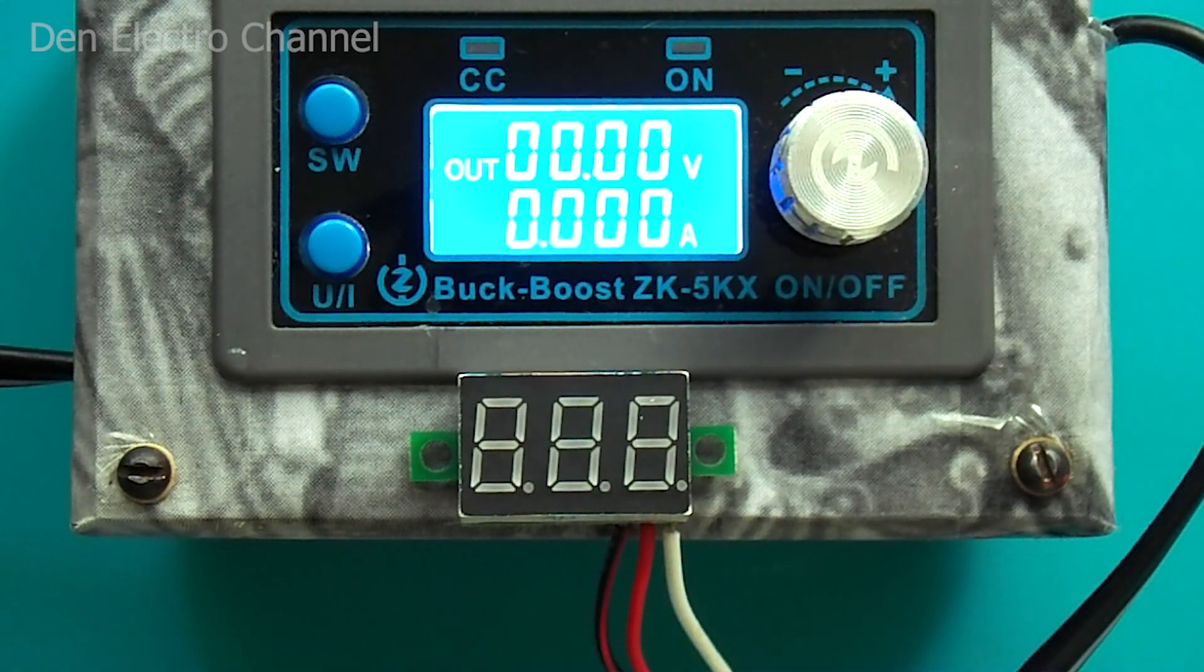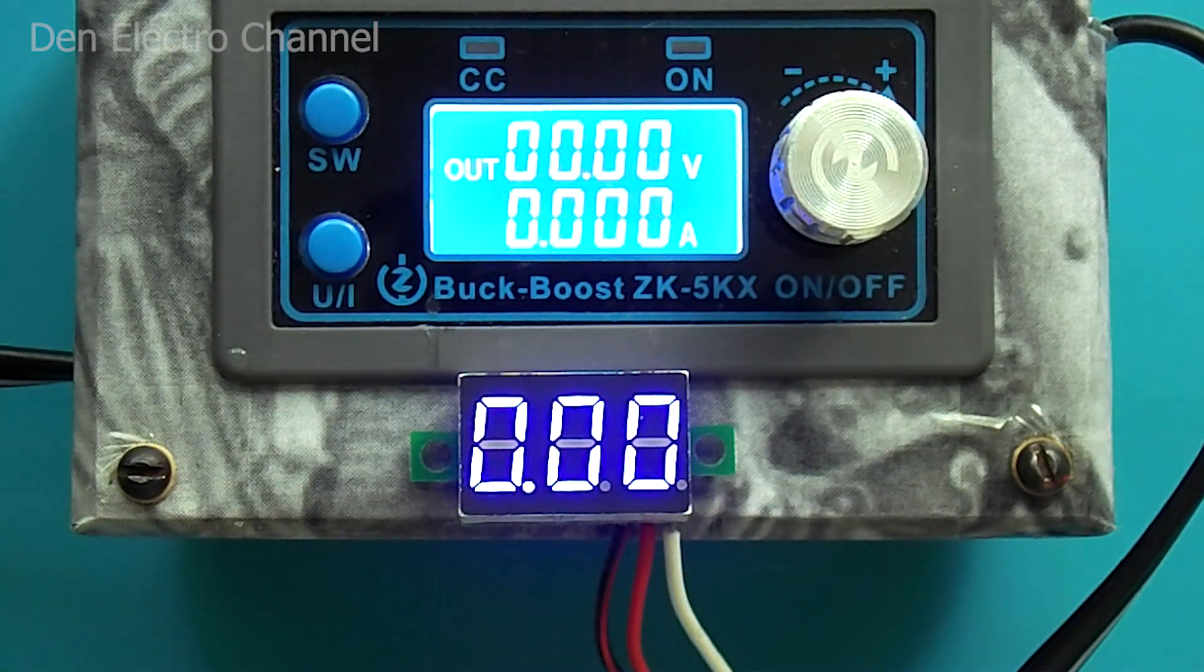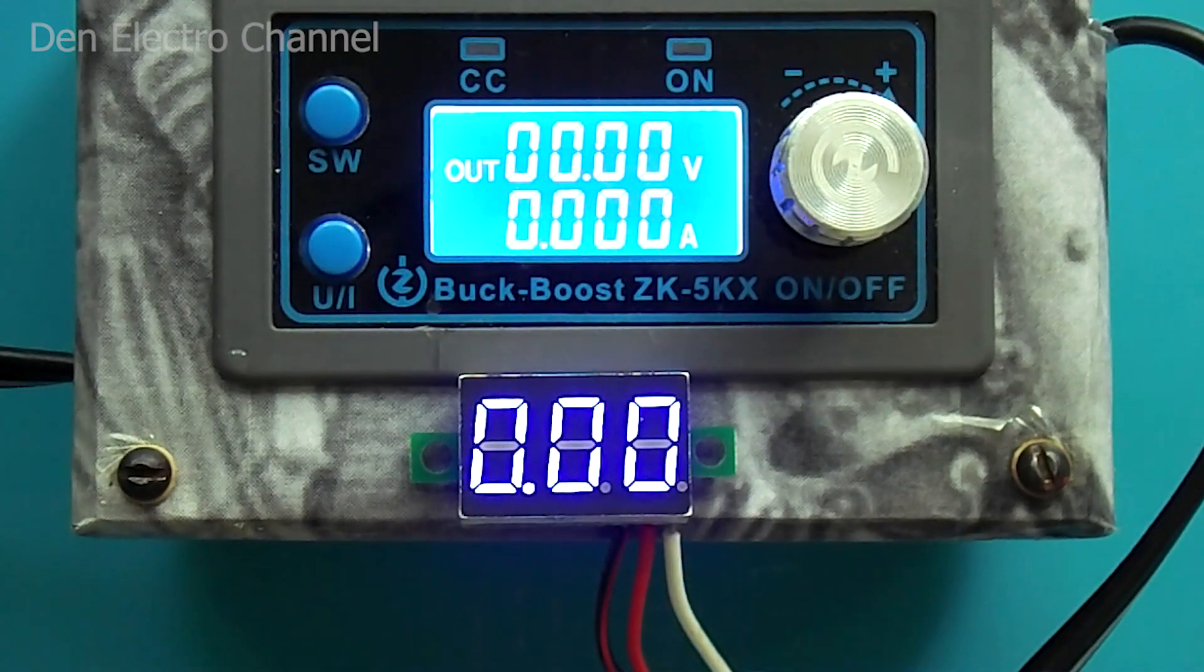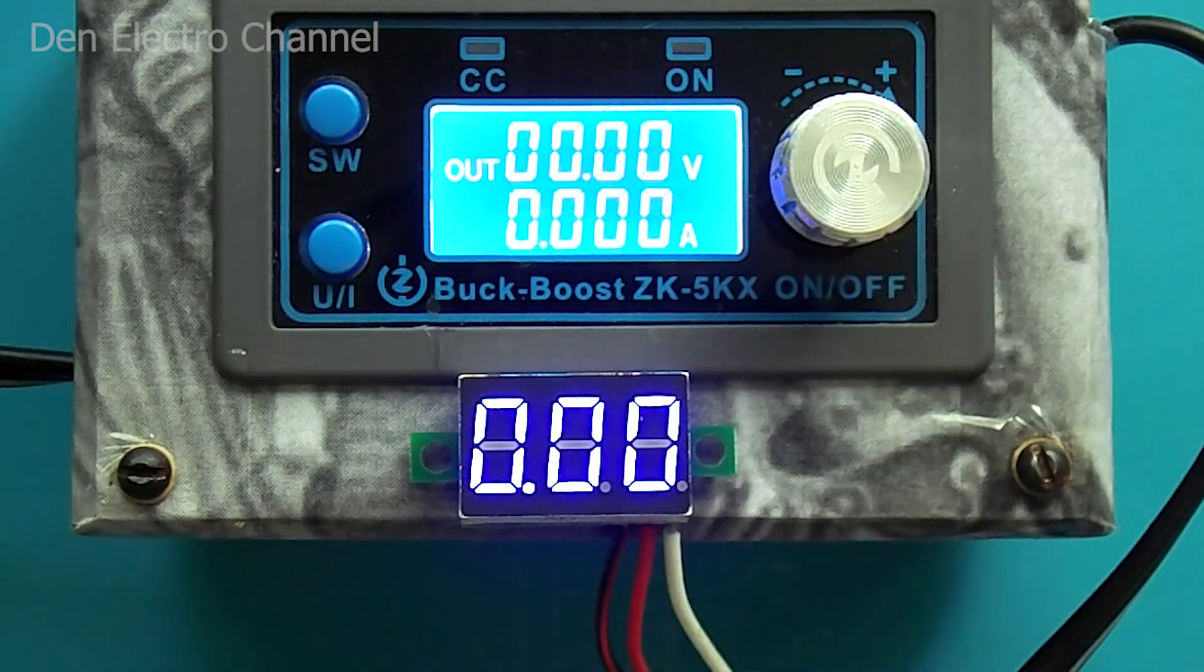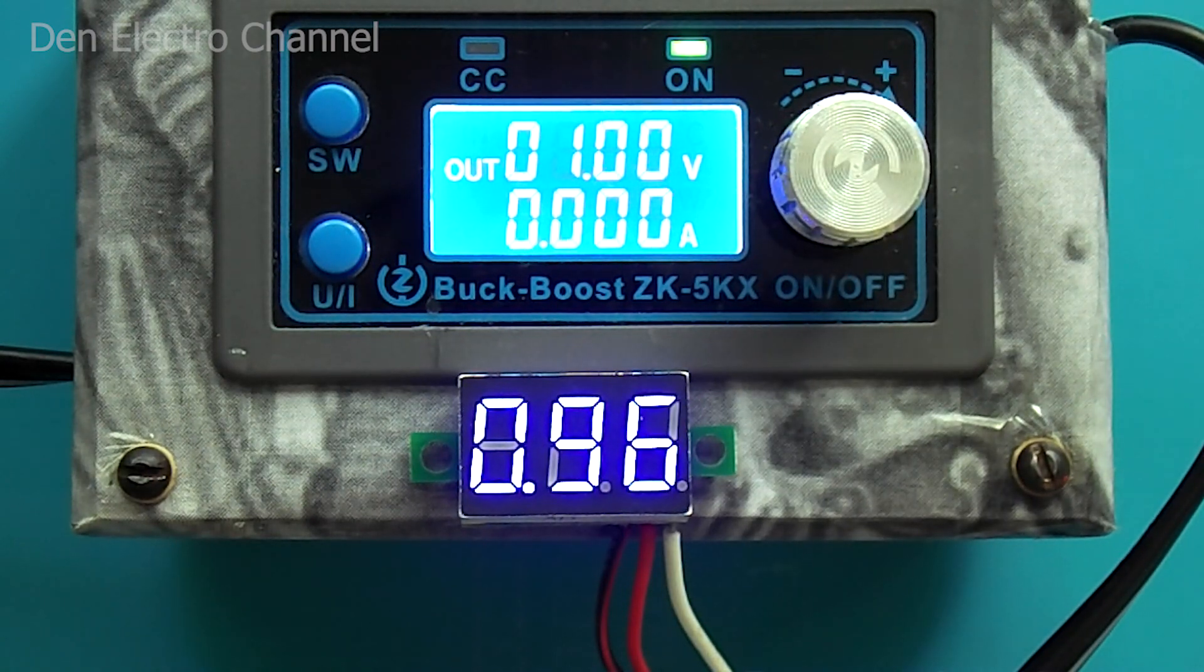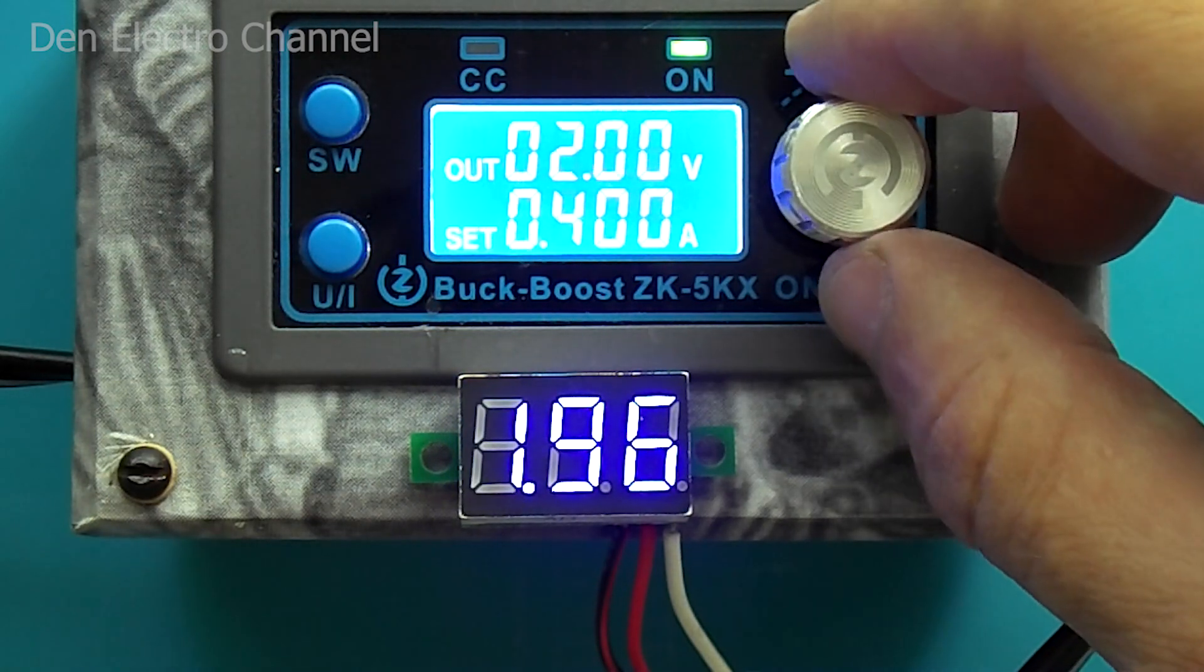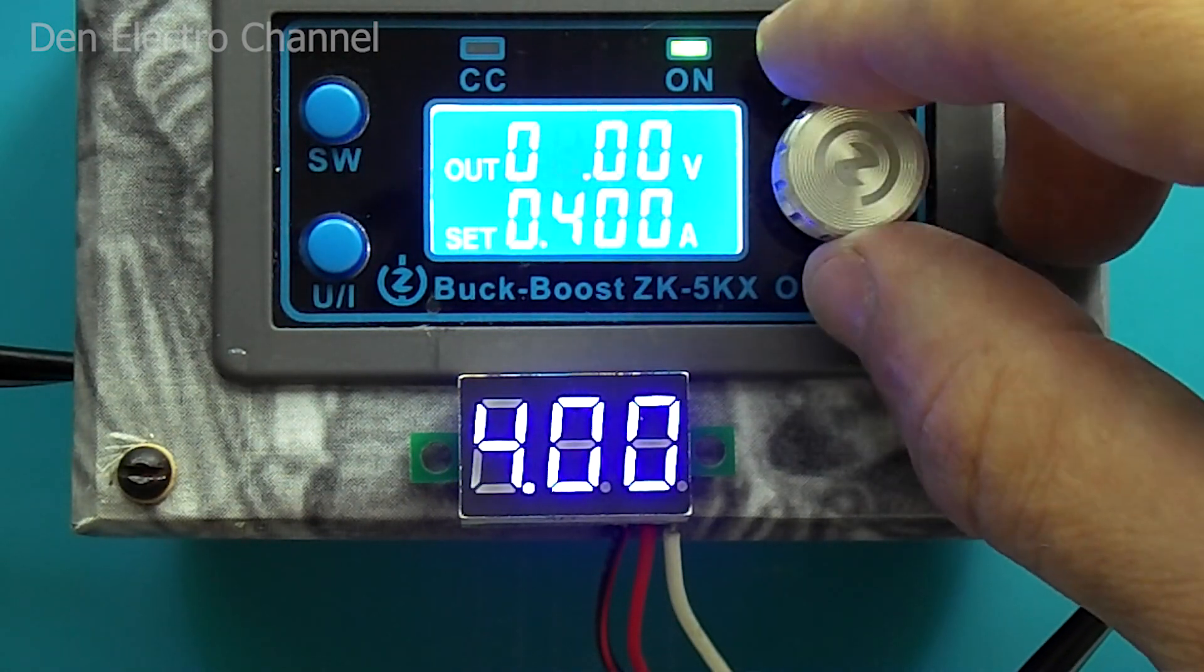Now, when the supply voltage is applied, the voltmeter immediately turns on. If there is no voltage at the signal input, it will show zeros. After applying the voltage, it is immediately displayed, and it is possible to measure low voltages.